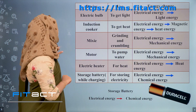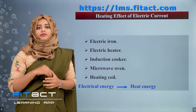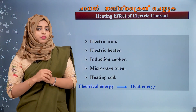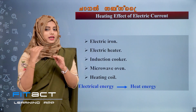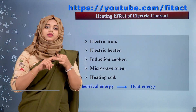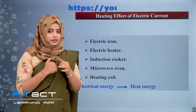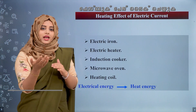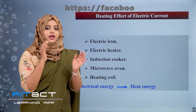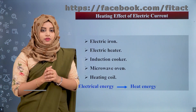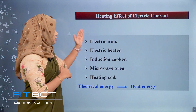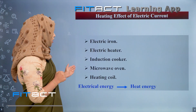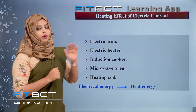Our first topic is the heating effect of electric current. When any electrical device works, energy is released — a small amount of heat is released. In all these devices, we provide electrical energy which produces heat. Devices that use this heating effect include: electric iron, electric heater, induction cooker, microwave oven, heating coil, etc.